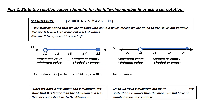Part C: State the solution values — domain — for the following number lines using set notation. What is set notation? Set notation is a way to describe a particular set of values when there are infinite possibilities in between. You'll notice there is a maximum, a minimum, the values in between, and at the end we use a funny-looking e and a funny-looking r. The squiggly brackets signify set notation.